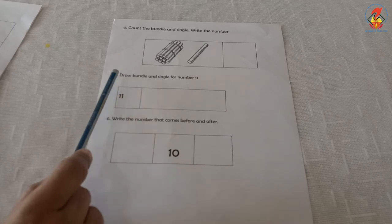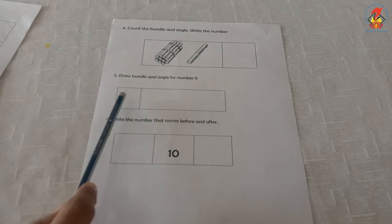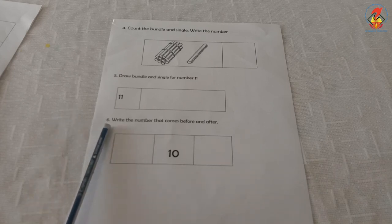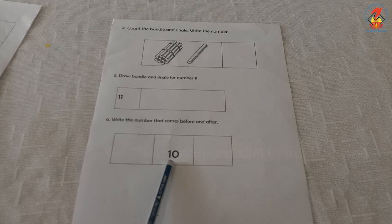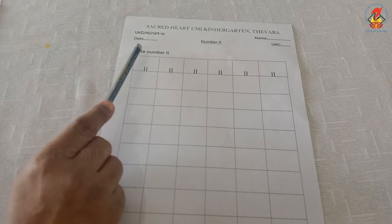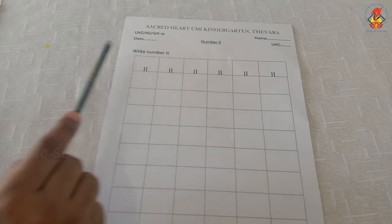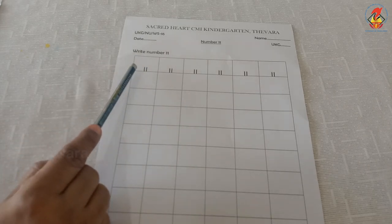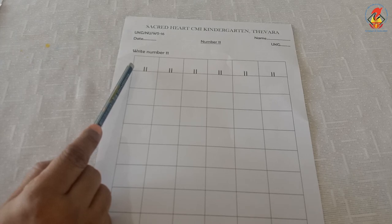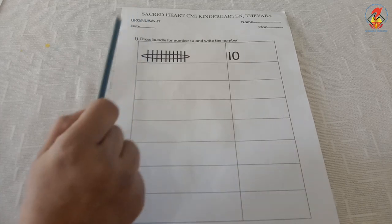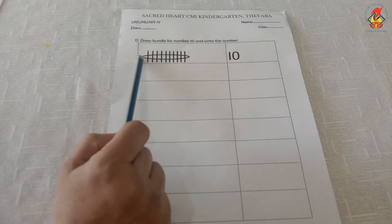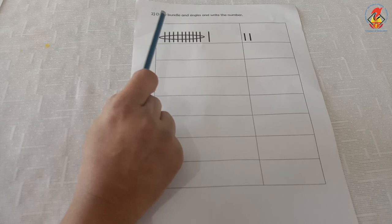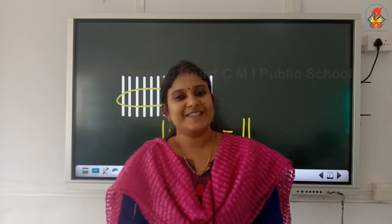The sixth question is: write the number that comes before and after number 11. Here you can see number 10 — write the number that comes before and after. This is the next worksheet, worksheet 16: write number 11. While writing you have to say 1 ten and 1 single makes number 11. This is worksheet 17: draw bundle and singles and write the number. See you in next class with another topic.